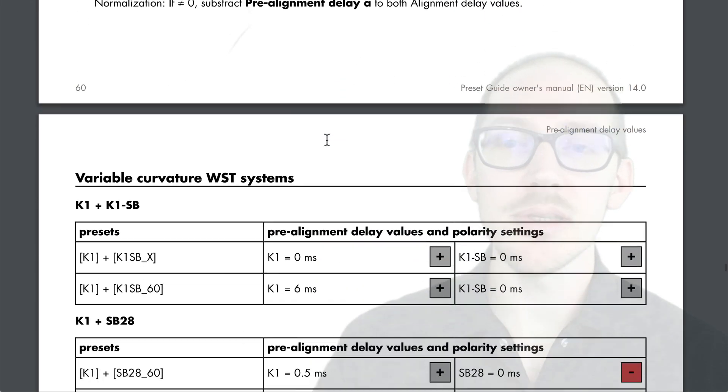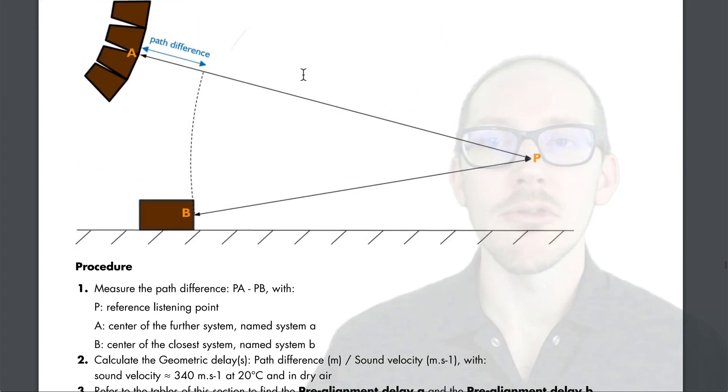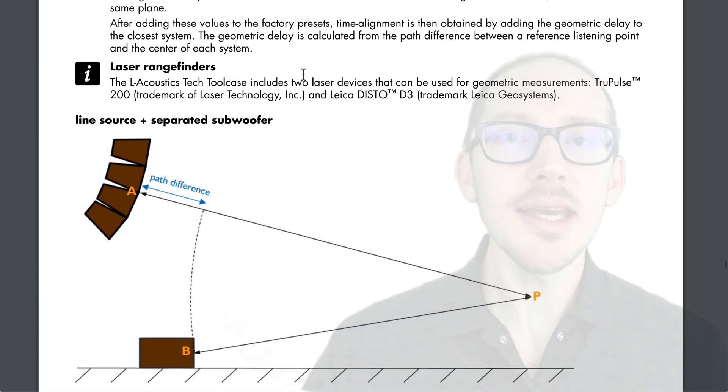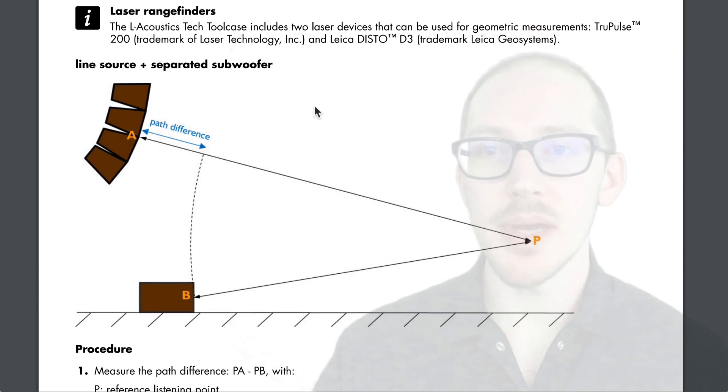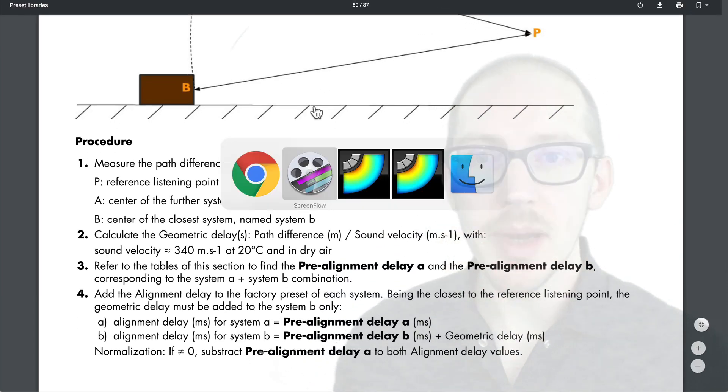And then if you scroll down, they have pages and pages of these pre-alignment values where you can combine one speaker with another, and it gives you the pre-alignment values. It's these pre-alignment values that are the key that was missing from the laser distance measure method that I showed you in a previous video. So let's go back there.